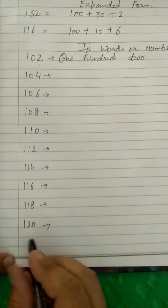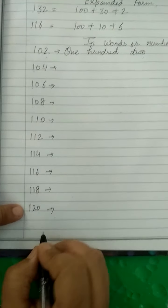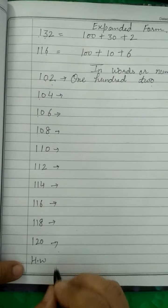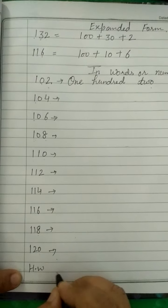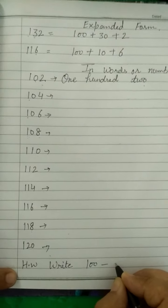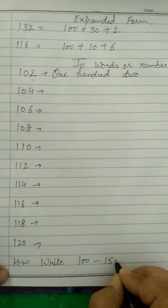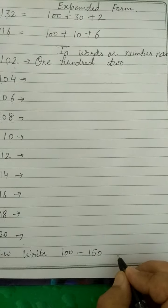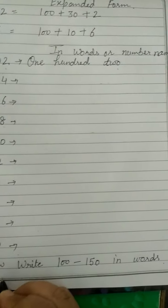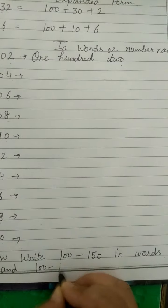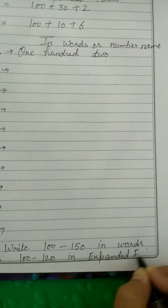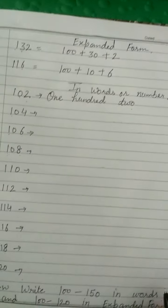These all you will revise in your rough notebook. And for today, your homework which you will do in your fair notebook is: write 100 to 150 in words, and write 100 to 120 in expanded form.